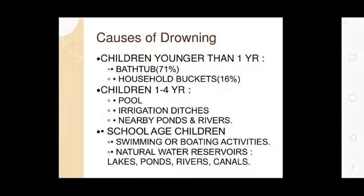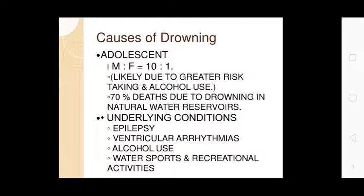For school-aged children, drowning occurs in swimming pools, boating activities, and natural water bodies such as lakes, ponds, and rivers and canals. Drowning is the third most common cause of accidental death in adolescents. The ratio of male to female is 10 to 1, likely due to greater risk-taking behavior and alcohol use. 70% of deaths due to drowning in natural water occur under various conditions.